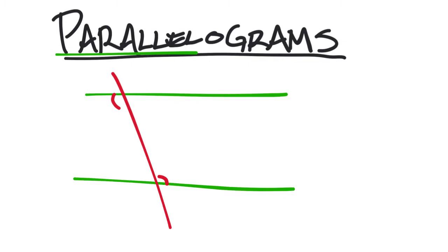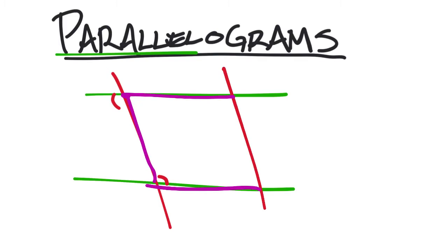A parallelogram is when you have a four-sided shape — so it is a quadrilateral — but it's going to have not only one set of green parallel lines, but also another set of parallel lines that makes it up. This creates even more unique scenarios. You'd say this corresponding angle is now congruent, and these corresponding angles are congruent, or these alternate exterior angles are congruent, or these alternate interior angles are congruent.